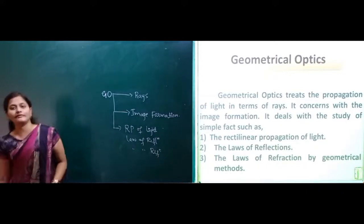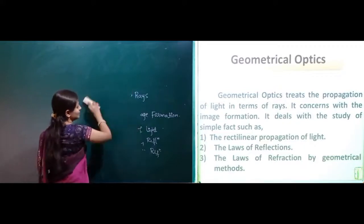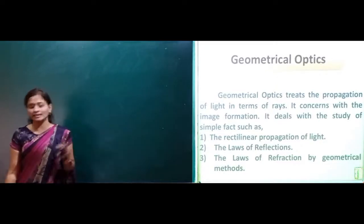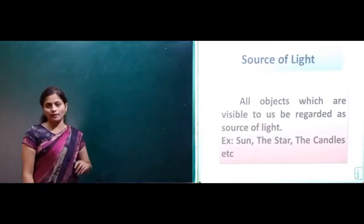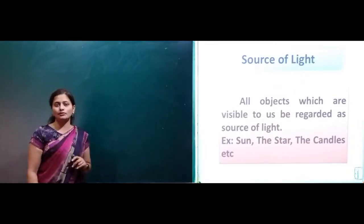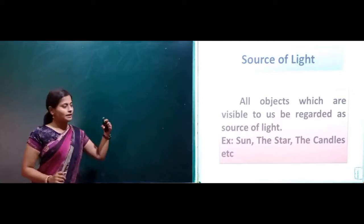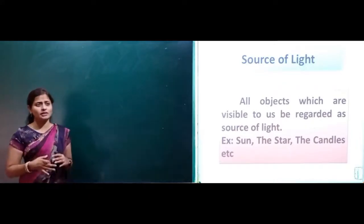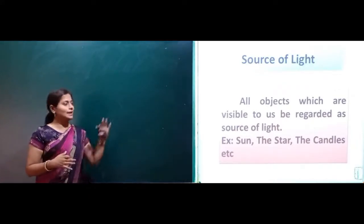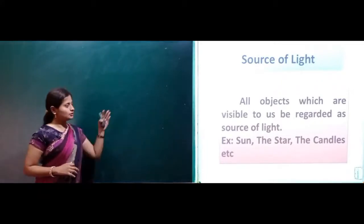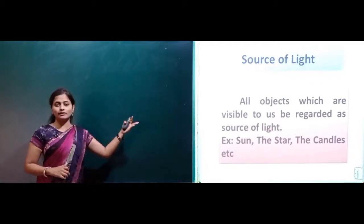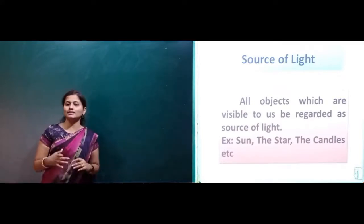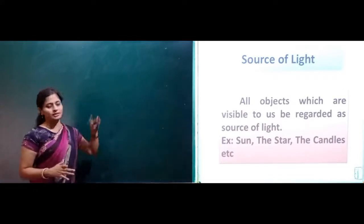Now let us move to some basic definitions. First: source of light. All objects which are visible to us are regarded as sources of light. For example, the sun and stars are natural sources of light, and candles etc. are artificial, man-made sources of light.